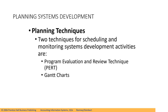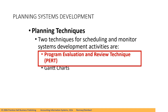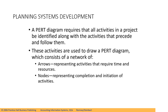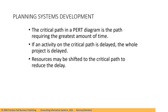There are two techniques for scheduling and monitoring system development activities. They are PERT, the Program Evaluation and Review Technique, and Gantt charts. PERT is a diagram that requires all activities in a project to be identified along with the activities that precede and follow them. These activities are used to draw a PERT diagram which consists of a network of arrows and nodes — arrows represent activities that require time and resources, while nodes represent completion and initiation of activities. The critical path in the PERT diagram is the path requiring the greatest amount of time. If an activity on the critical path is delayed, the whole project is delayed, so you need to determine what are the critical paths in your system development lifecycle. Some resources may be shifted to the critical path to reduce the delay.